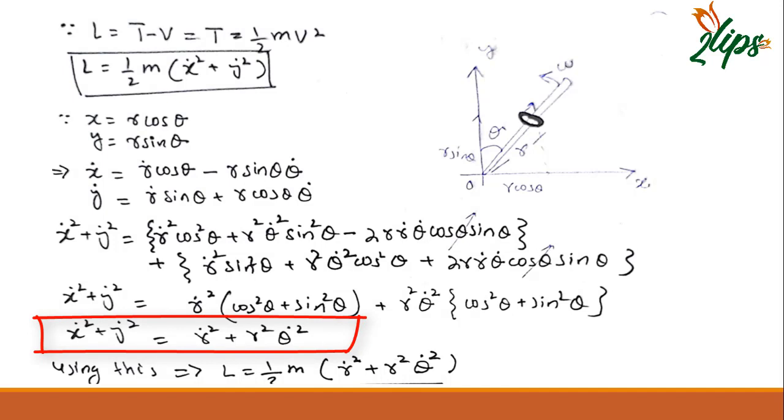Finally, I will get X dot squared plus Y dot squared equals R dot squared plus R squared theta dot squared. Putting this value into the above equation, I will get L equals half m (R dot squared plus R squared theta dot squared).